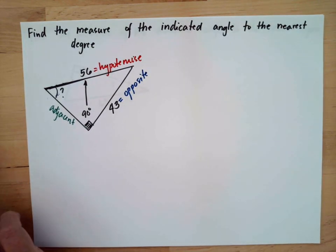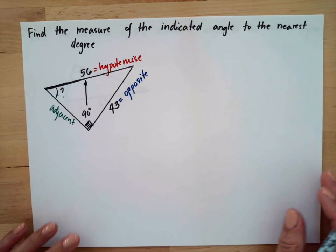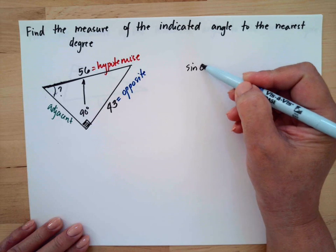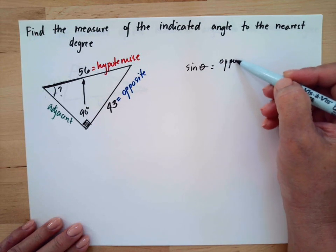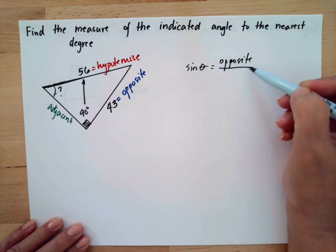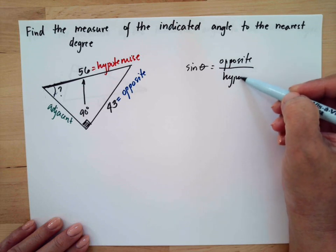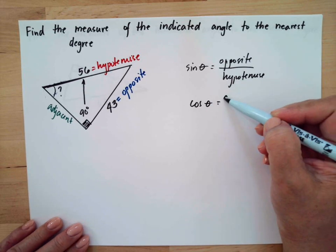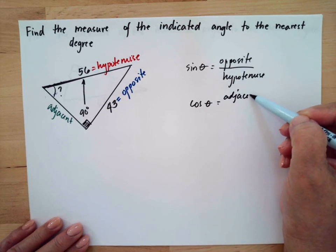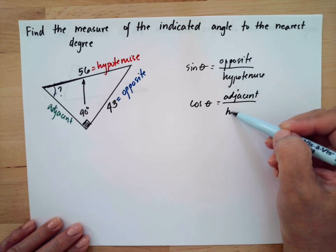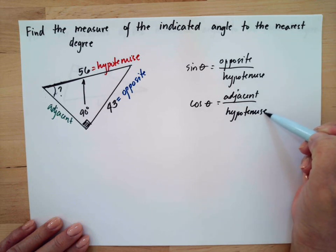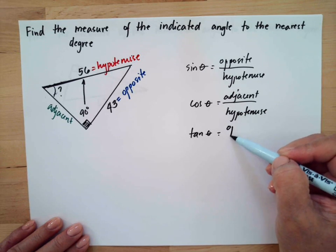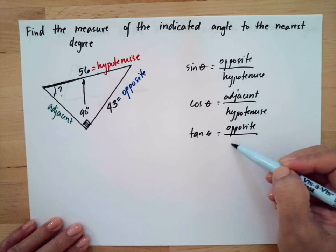Now we will use trigonometric functions to find the angle. Sine of the angle equals opposite over hypotenuse. Cosine of the angle equals adjacent over hypotenuse. And tangent of the angle equals opposite over adjacent.